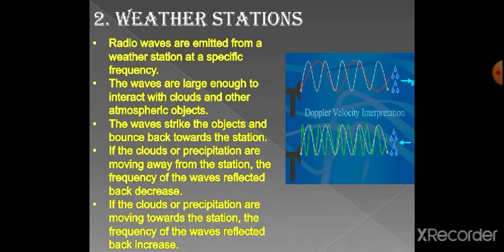The weather station application: Radio waves are emitted from a weather station at a specific frequency, then interact with the clouds and atmospheric objects, strike the objects, and bounce back towards the station. If the clouds are moving away from the station, the frequency of the reflected wave decreases. If the clouds are moving towards the station, the frequency of the reflected waves increases.